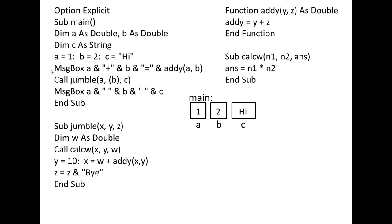Then a message box is created that displays the value of A, which is 1, plus the value of B, which is 2, equals the value of the function ADDIE(A, B). We must calculate the value of ADDIE(A, B) before the message box can be displayed on the screen.